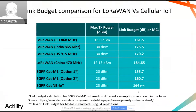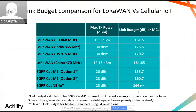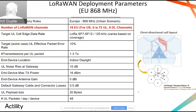Looking at the link budget comparison of LoRaWAN versus cellular IoT, it's very easy to see from this chart that LoRaWAN is very comparable to NB-IoT, and it's much better than LTE-M. It should also be noted that for NB-IoT, you need at least 64 repetitions to achieve the 164 dB link budget, which means it really consumes a lot of power when using NB-IoT at the cell edge.